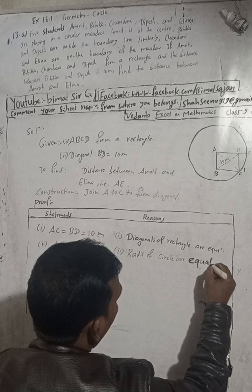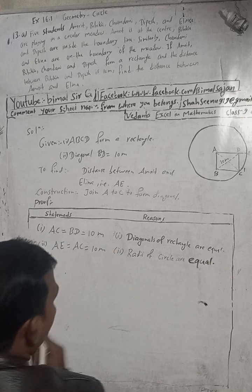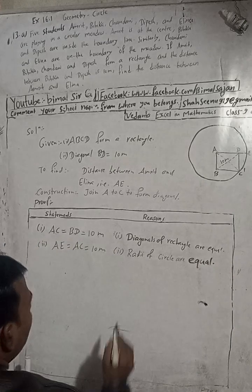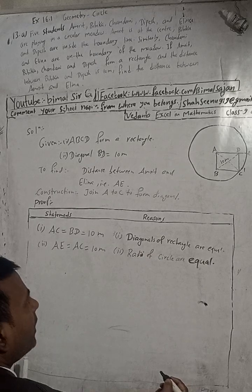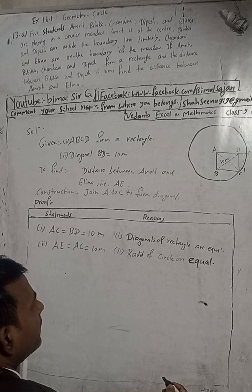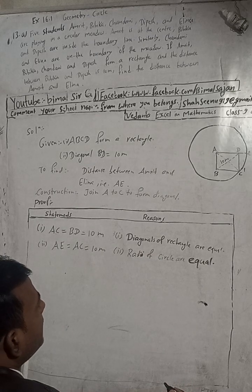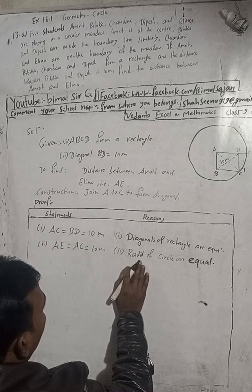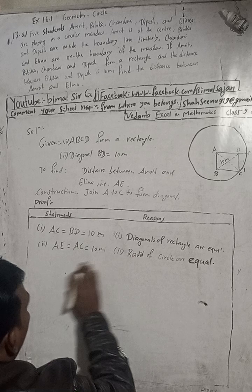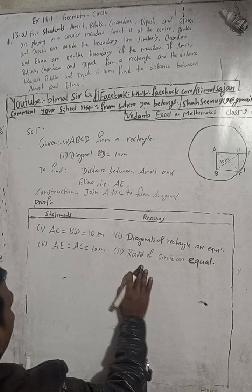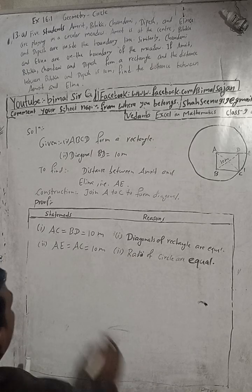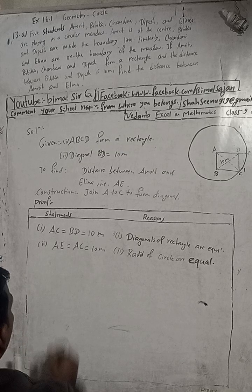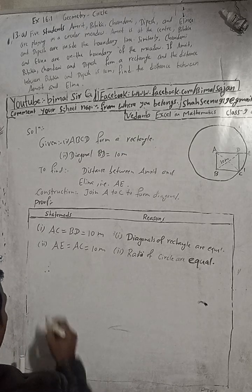The radius is the full radius of the circle. AE and AC are both radii of the same circle. Therefore, the distance between Amrit and Elina is equal to 10 meters.